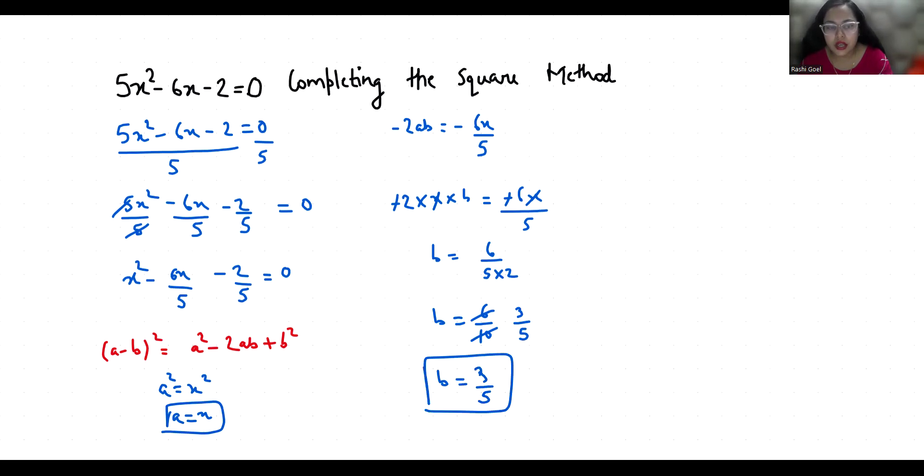Now, our equation is x² - 6x/5 - 2/5. So I am going to add or subtract (3/5)². We can rearrange it: x² + (3/5)² - 6x/5 - 2/5, and 3² is 9, 5² is 25, so 9/25 = 0. It becomes an identity of A² + B² - 2AB where A is x and B is 3/5.